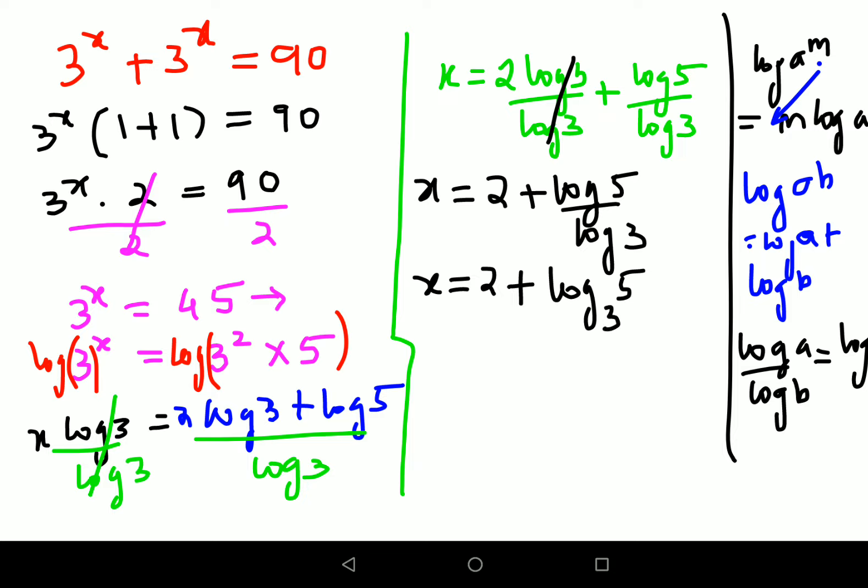But if they have given you the log book, then you realize that value of log 5 is 0.699 divided by 0.477. So this comes out to be x equals to 2 plus 1.465. So value of x comes out to be 3.465.